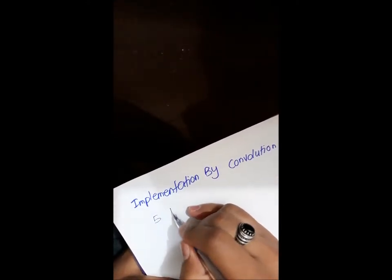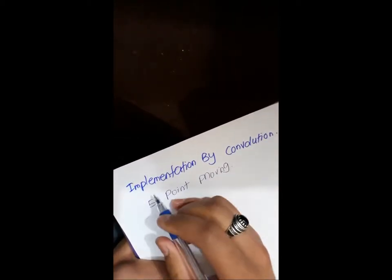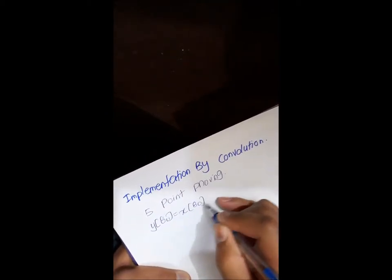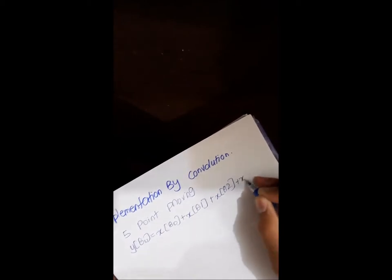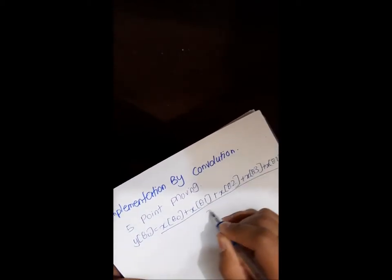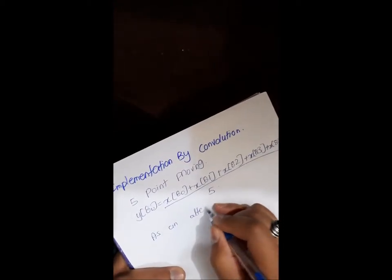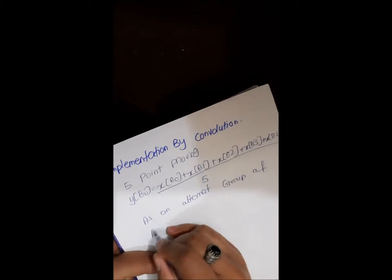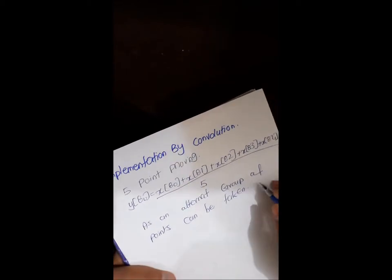First is 5 point moving average, in which y of 80 is equal to x of 80 plus x of 81 plus x of 82 plus x of 83 plus x of 84 are added and this is divided by 5.